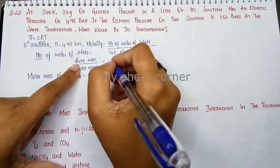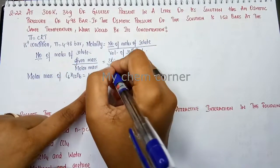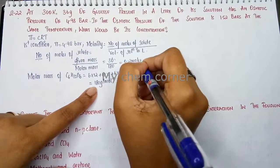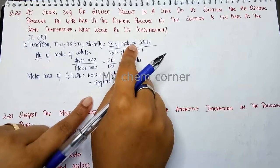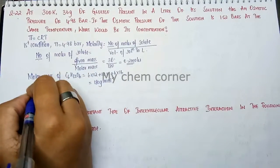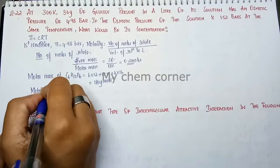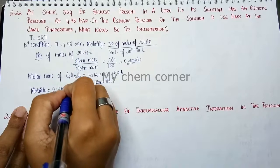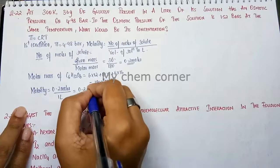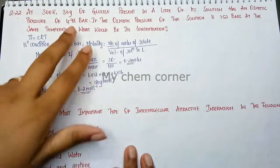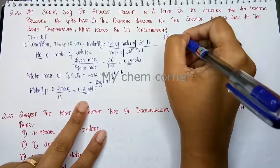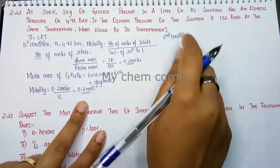Substituting into the equation: given mass is 36 grams divided by molar mass 180, which gives 0.2 moles. The volume of solution is 1 liter as per the question. So the molarity for the first condition is 0.2 moles per liter. Now let's consider the second condition.